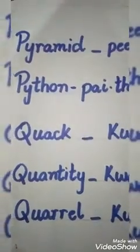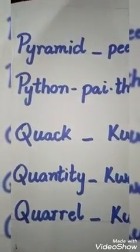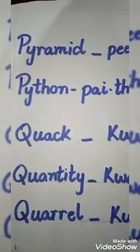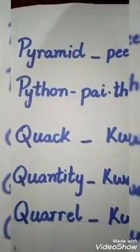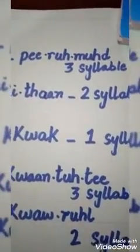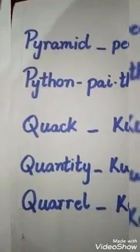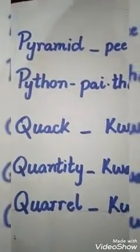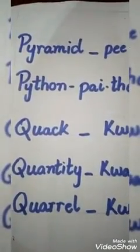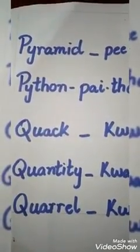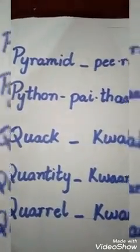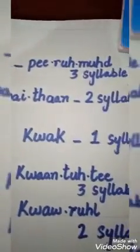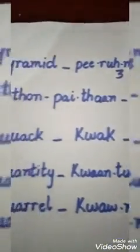Our next word is 'Pyramid'. P-Y-R-A-M-I-D, Pyramid. Pyramid is a three-syllable word. Our next word is 'Python'. P-Y-T-H-O-N, Python. Python is also a two-syllable word.